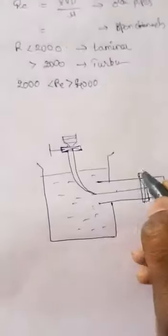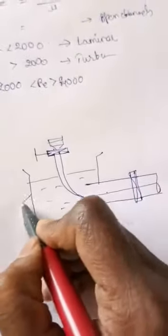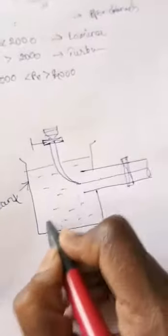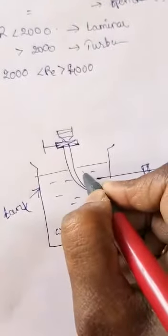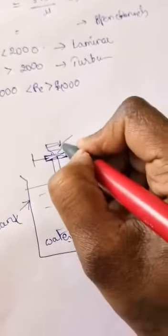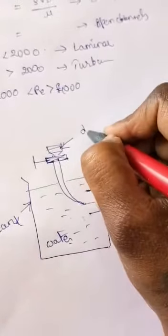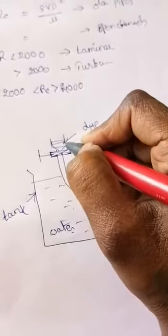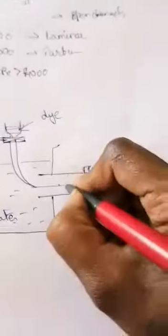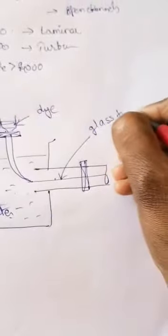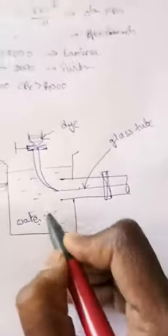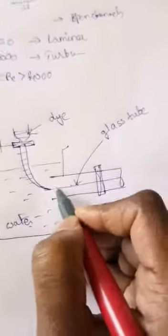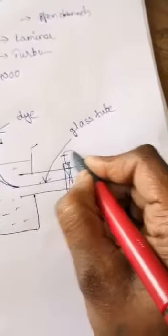This diagram represents the Reynolds experiment apparatus. The apparatus consists of a tank in which water is maintained at a constant head. There is a small dye container holding a dye. There is a glass tube with a bell mouth entrance at one end and a regulating valve at the other end to control the flow.